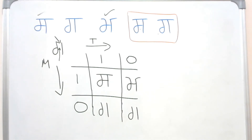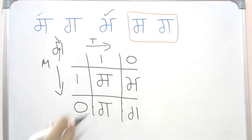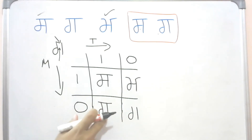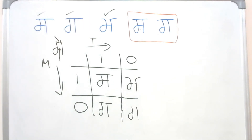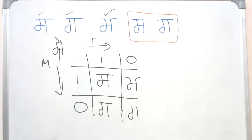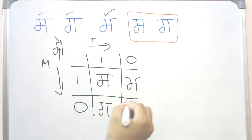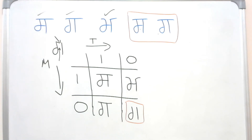Then in the third case, we have a line on the top of the letter but no line in the middle — that gives us Gagga. The fourth case — no line on top and no line in the middle — does not exist in Gurmukhi letters. We do not have any letter that looks like that, so we ignore it.